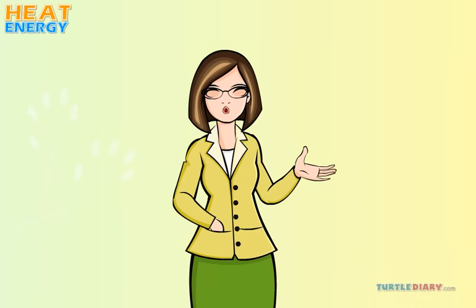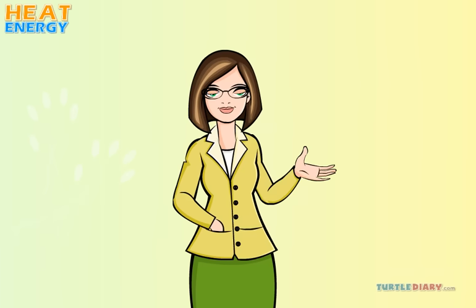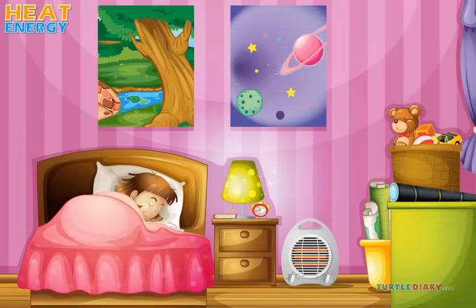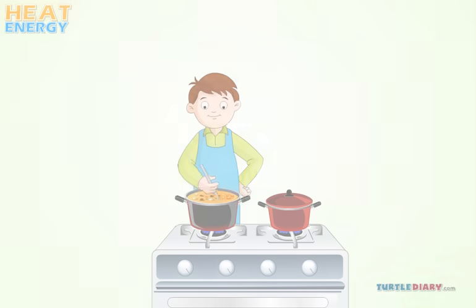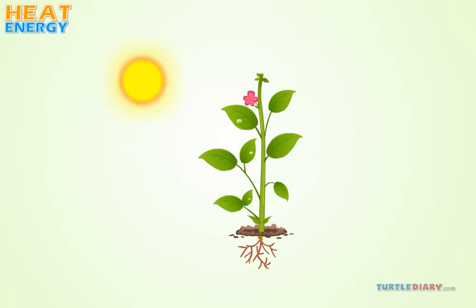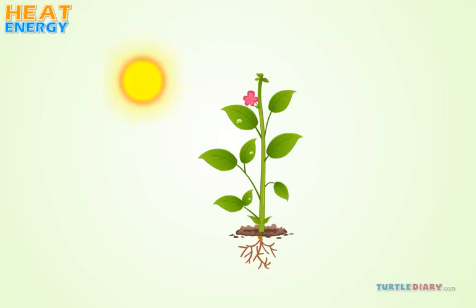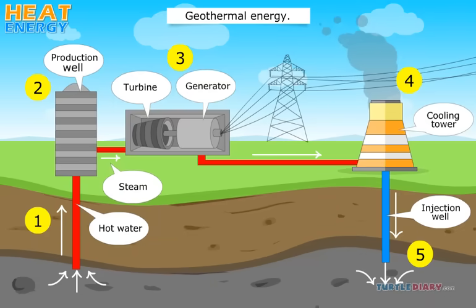Heat energy can be used for many things. The most obvious is for keeping us warm in our homes and cooking food on our stove. A hot bath can also be used to warm up our bodies. Heat energy is also used by plants to make food for themselves. In some places, there are hot sources of water found deep within the earth that can be used as a source of electricity — when hot water is used to make electricity, this is called geothermal energy.